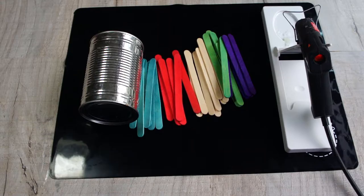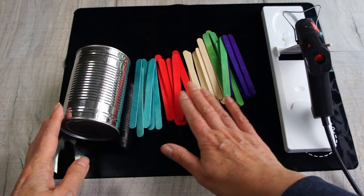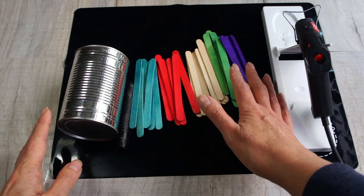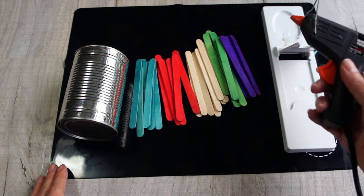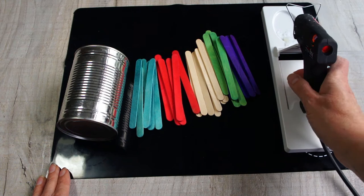The first thing you're going to need is your tin can. Make sure you've thoroughly washed it and dried it and taken off any labels. Get your popsicle sticks or craft sticks, whatever colors you like, and a hot melt glue gun.